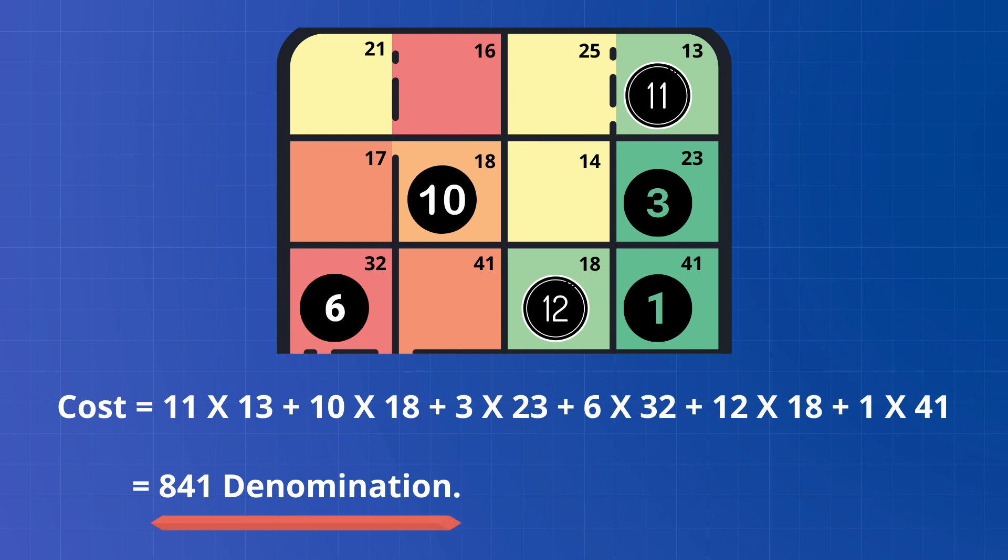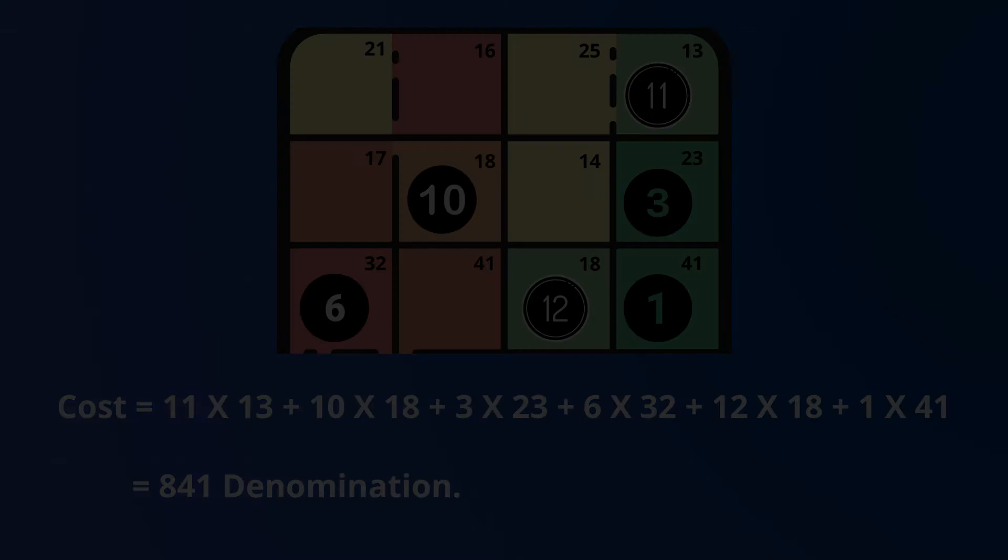As compared with what we have got from northwest corner method, the cost obtained from VAM or Vogel's approximation method is more optimum as you can see here.